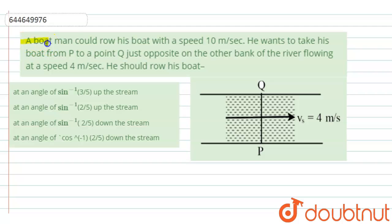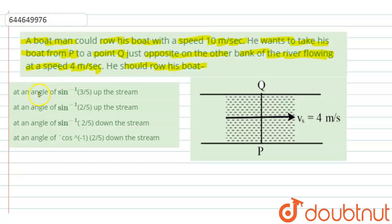The given question is: a boatman can row his boat with a speed of 10 meters per second. He wants to take his boat from point P to a point Q, just opposite on the other bank of the river, which is flowing at a speed of 4 meters per second. We have to find the angle at which the boatman should row his boat to reach from point P to point Q.